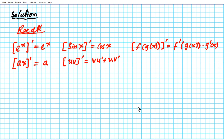Now that we've refreshed our memory on the necessary differentiation rules, let's get started with the problem. We have y equals e to the negative x times sine 3x. This is an exponential function and a composite trigonometric function. Since we have a product of two functions, we're going to be using the product rule.